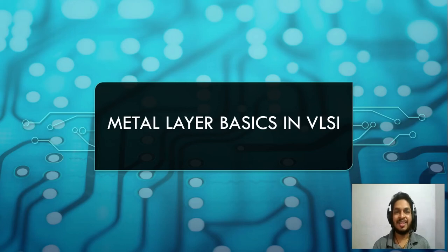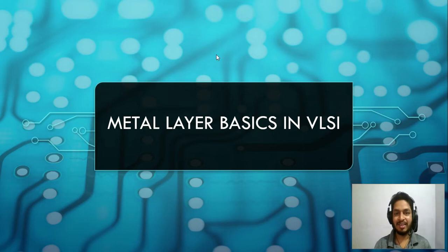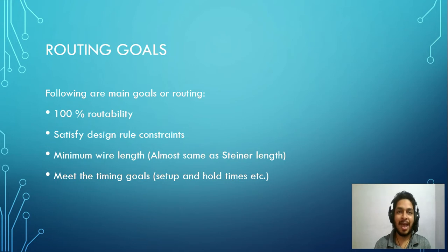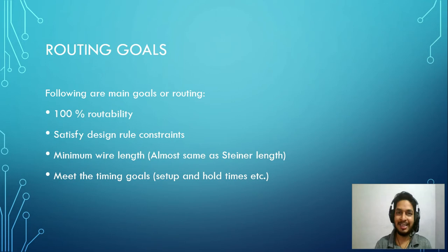Hello everyone. Without wasting time, let's head straight to the topic: metal layer basics in VLSI. Metal layers are deposited after the base layer manufacturing happens, so it is also called the back end of the line in the manufacturing process. The front end of the line refers to the base layer and the back end of the line refers to the metal layers.